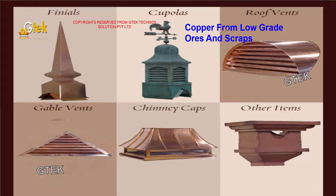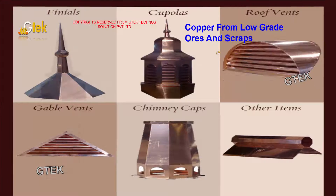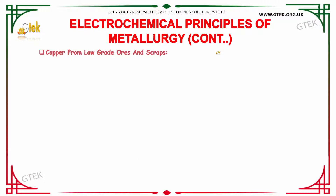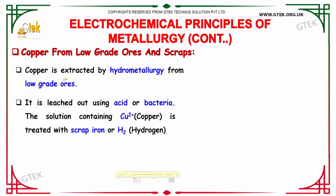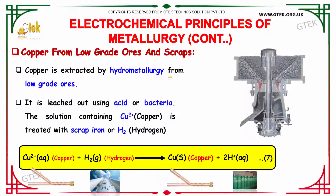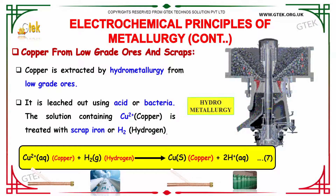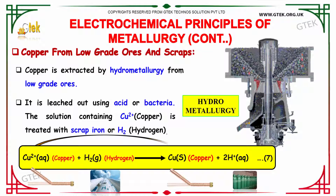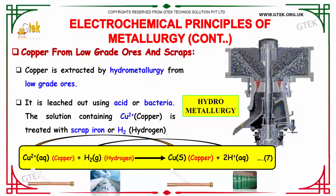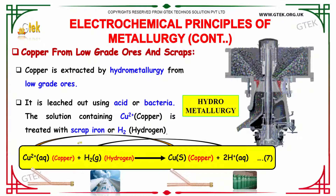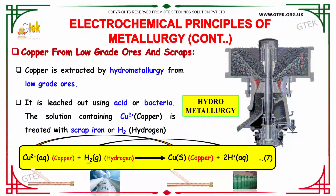Copper is extracted by hydrometallurgy from low-grade ores. It is leached out using acid or bacteria. The solution containing Cu²⁺ ions is then treated with scrap iron or hydrogen: Cu²⁺ + H₂ gives copper and H⁺ ions.